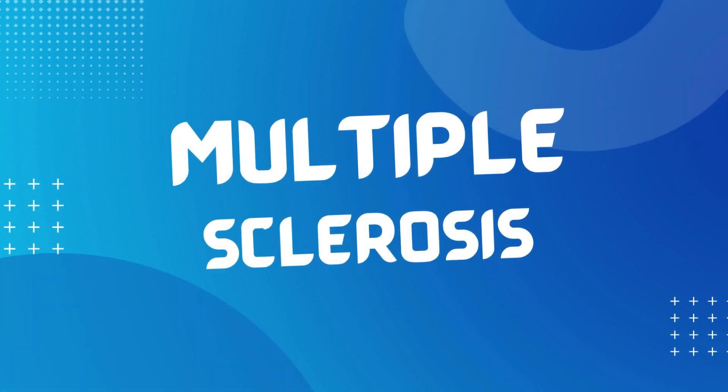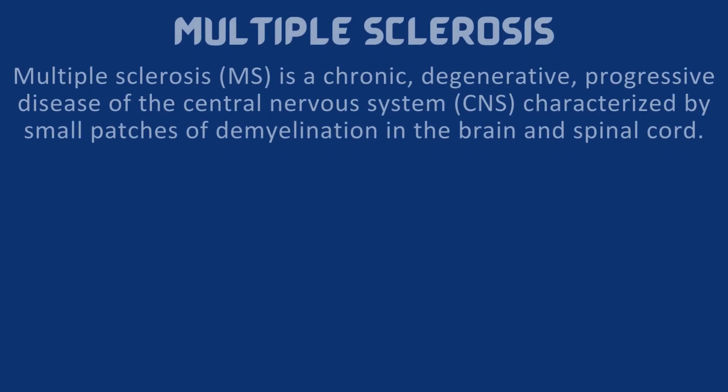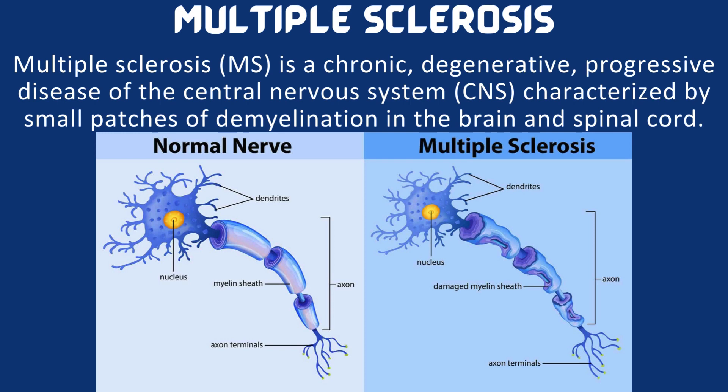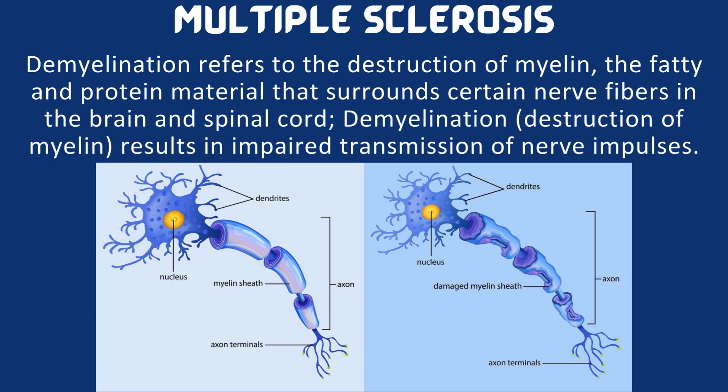In this video we will cover multiple sclerosis. Multiple sclerosis is a chronic degenerative progressive disease of the central nervous system characterized by small patches of demyelination in the brain and spinal cord. Demyelination refers to the destruction of myelin, the fatty and protein material that surrounds certain nerve fibers in the brain and spinal cord. Demyelination results in impaired transmission of nerve impulses.